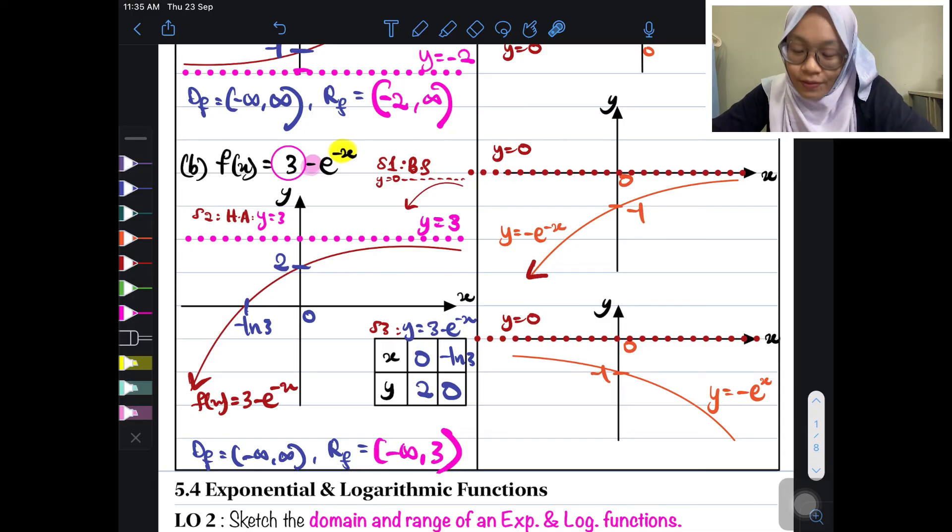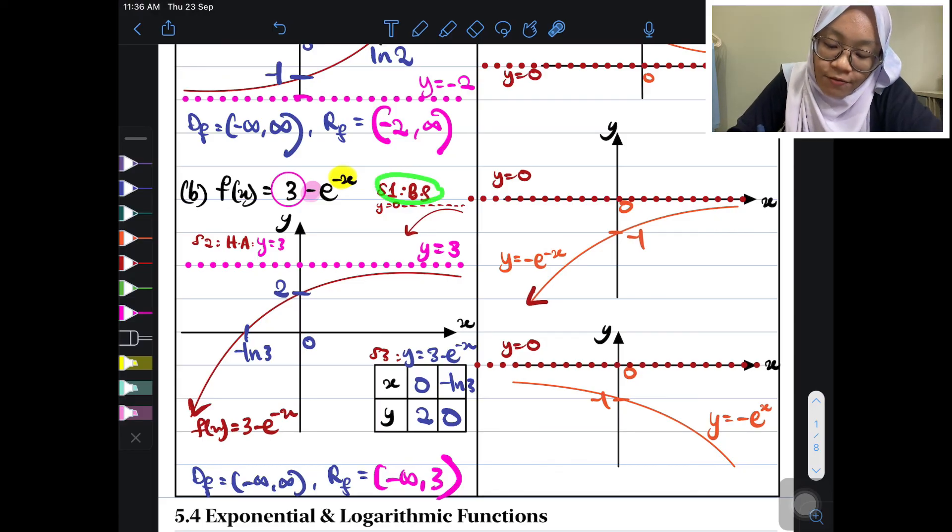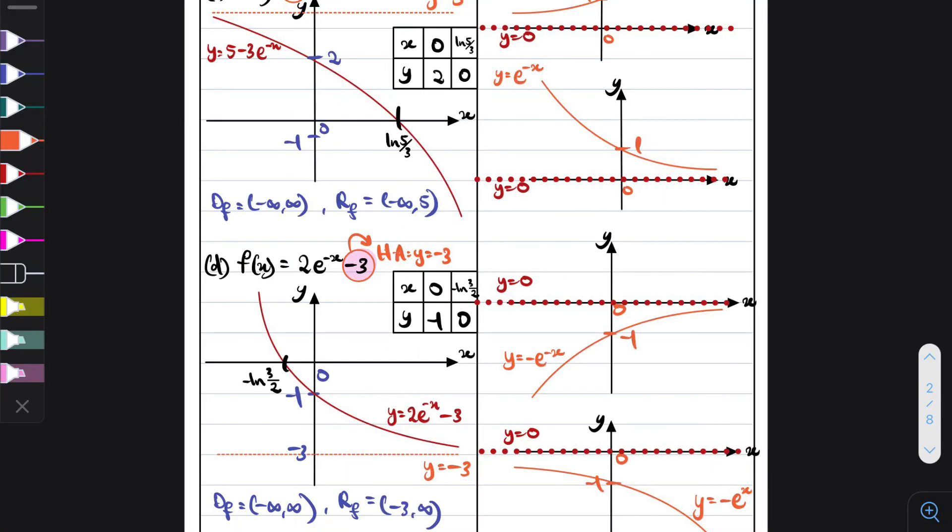Alright, is it okay with you guys? I hope you can understand that the first step is finding the basic shape. After finding the basic shape, then find the horizontal asymptote. After finding the horizontal asymptote, then you can draw. After drawing, then find the intercepts. After finding intercepts, label it. After labeling, then you can find the domain and range. That's all.